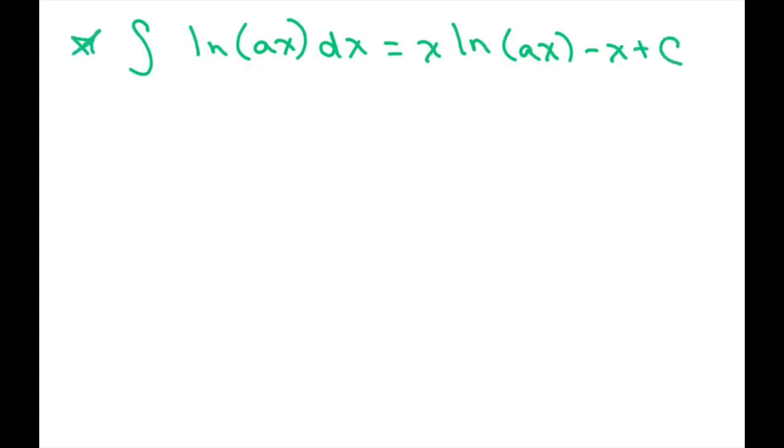So just make sure you memorize that. And when you plug it in, we're going to get the antiderivative of ln of 2x dx equals, so basically this is our u part. So you're going to get x ln of 2x, so you just copy that down, minus the integral of dx.